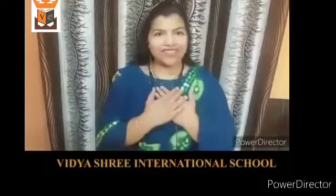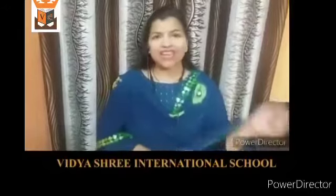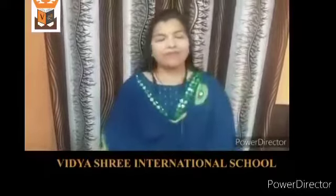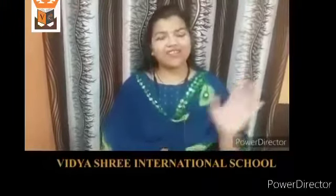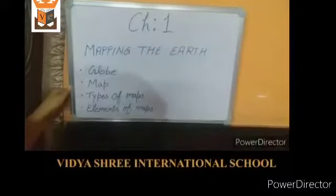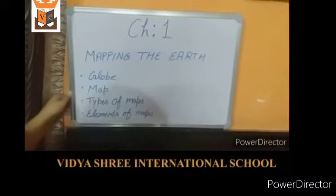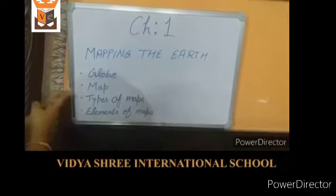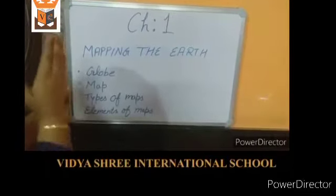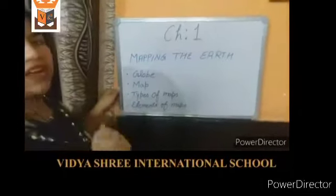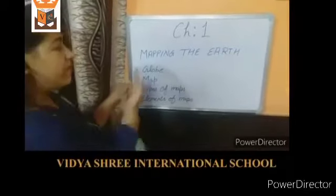Students, I am your assistive teacher and today we are going to revise our chapter 1, Mapping the Earth. Mapping the Earth is actually a diagrammatic representation of Earth or its part. In this chapter, we are going to read about globe, map, types of maps, elements of map, and after all these terms, we are going to compare what is the difference between maps and globes.